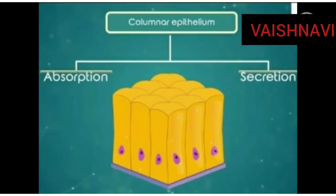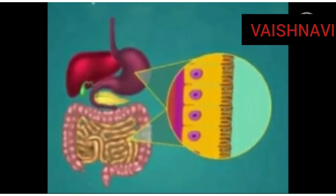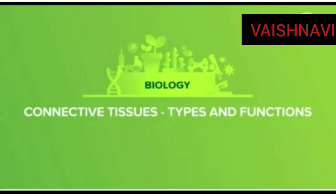Now let us know about columnar epithelial tissue. It contains column-like cells. The main function is absorption and secretion. Columnar epithelial tissue is present in the lining of the stomach and intestine. This is the information about epithelial tissue.